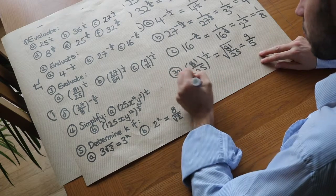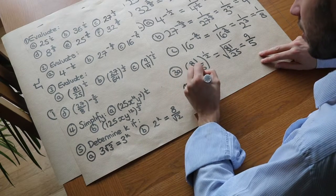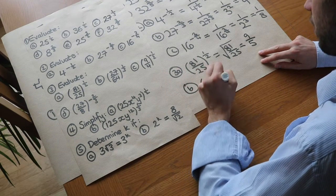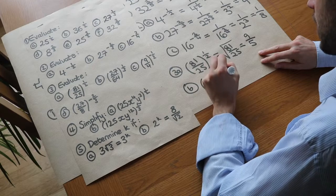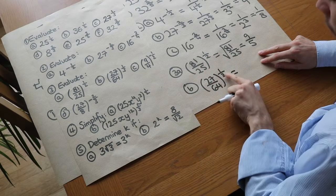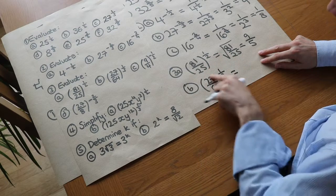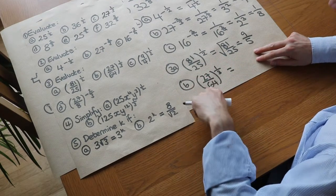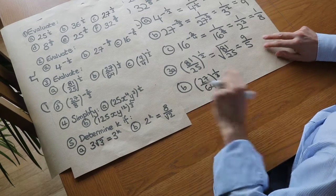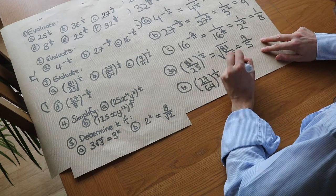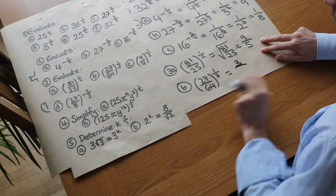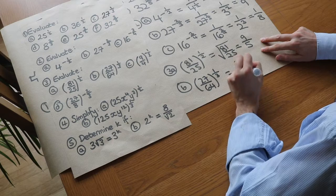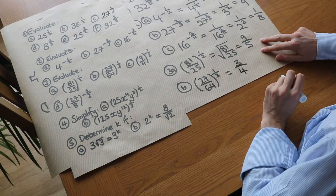For 27 over 64 to the power of a third: a power of a third cube roots the expression, so we cube root the numerator and denominator separately. The cube root of 27 is 3, and the cube root of 64 is 4, giving 3 over 4.